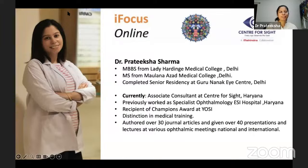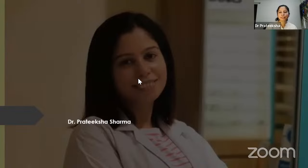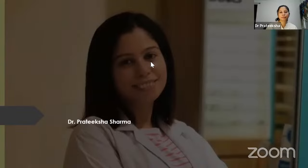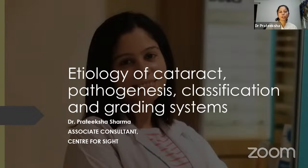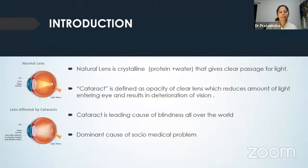Thank you Dr. Pranita and Dr. Jaita for the introduction. I'll start with the topic of etiology of cataract along with pathogenesis, classification, and grading. Although we revised cataract anatomy and physiology previously, I will just point out a few important things about the lens. The natural lens is a crystalline lens made up of protein and water that gives clear passage for light.